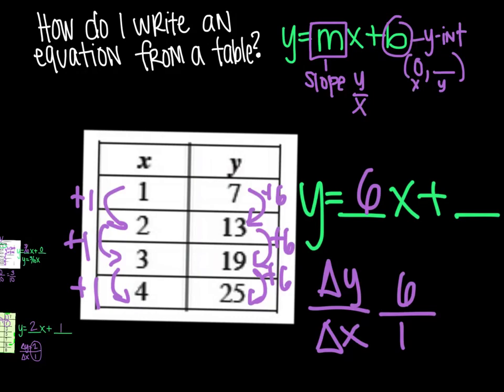If for some reason we were decreasing by 6, then it would be negative 6. So just keep that in mind. If it's decreasing, it's going to be negative. These examples just all happen to be positive. Then b is when x is 0. If you look at your table, there is no 0.